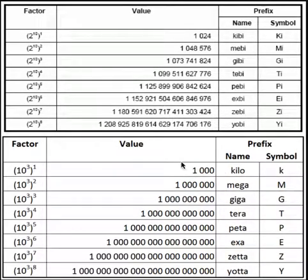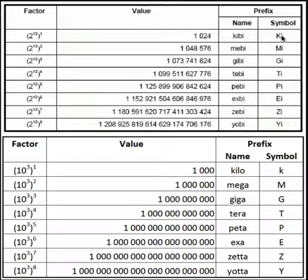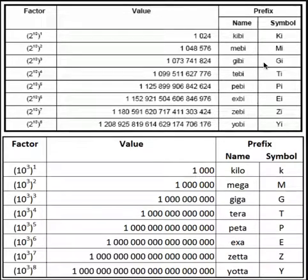Now it's becoming more increasingly common and more precise to use the following prefixes: KI — kibibyte; MI — mebibyte; GI — gibibyte; and so forth.